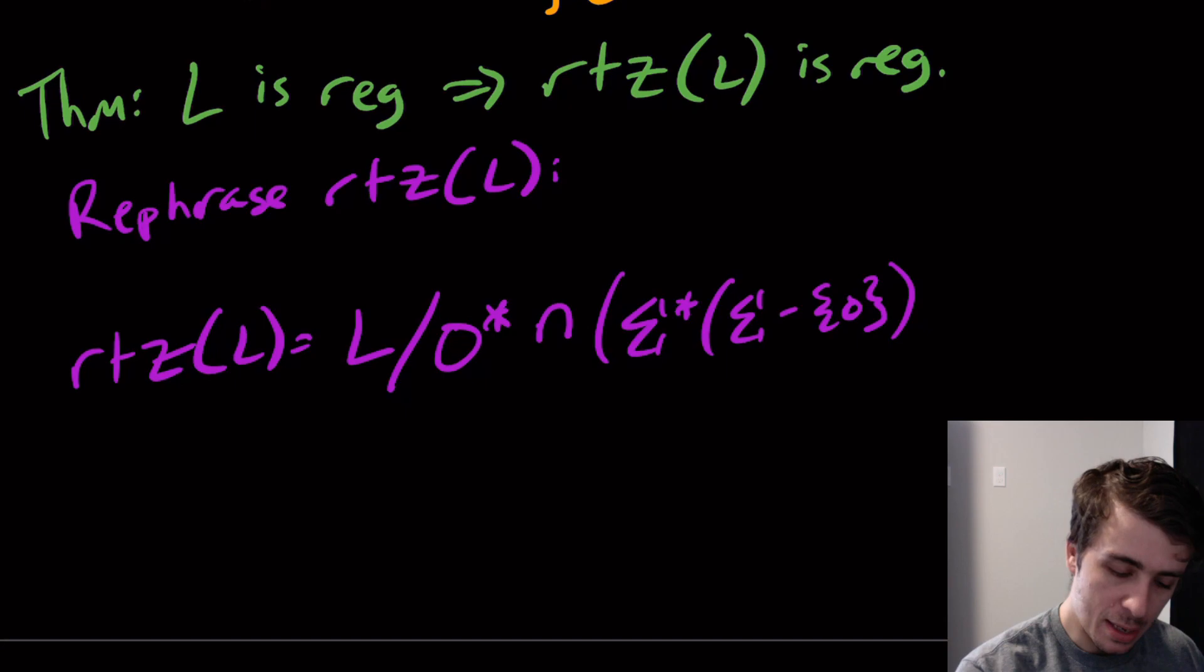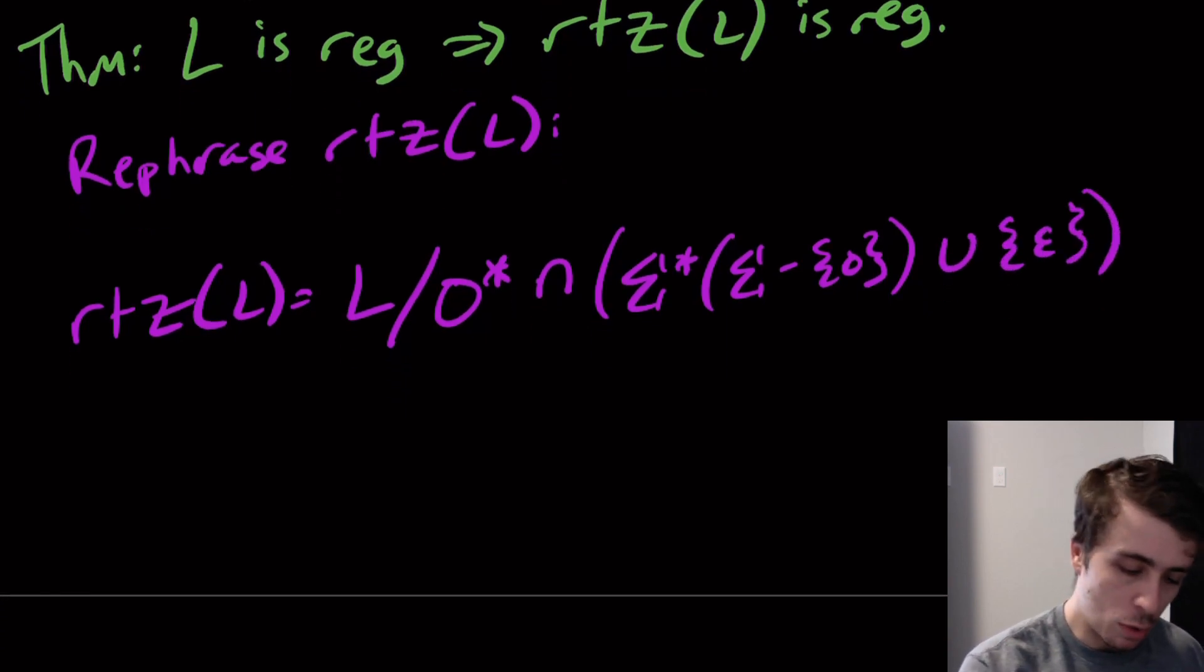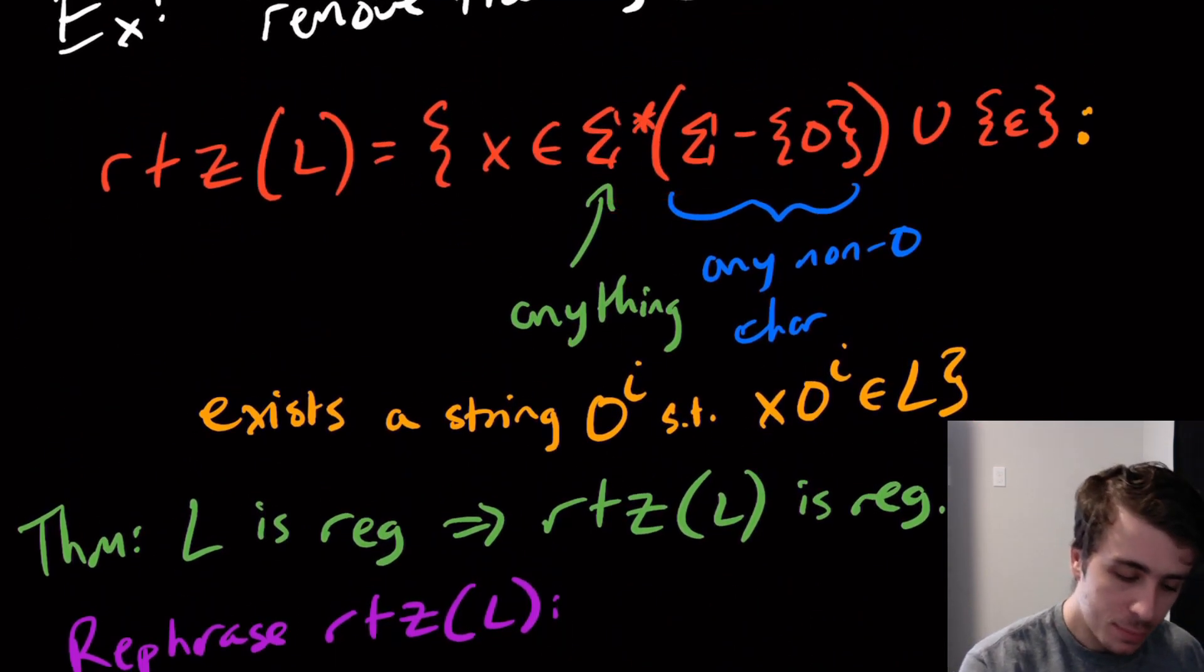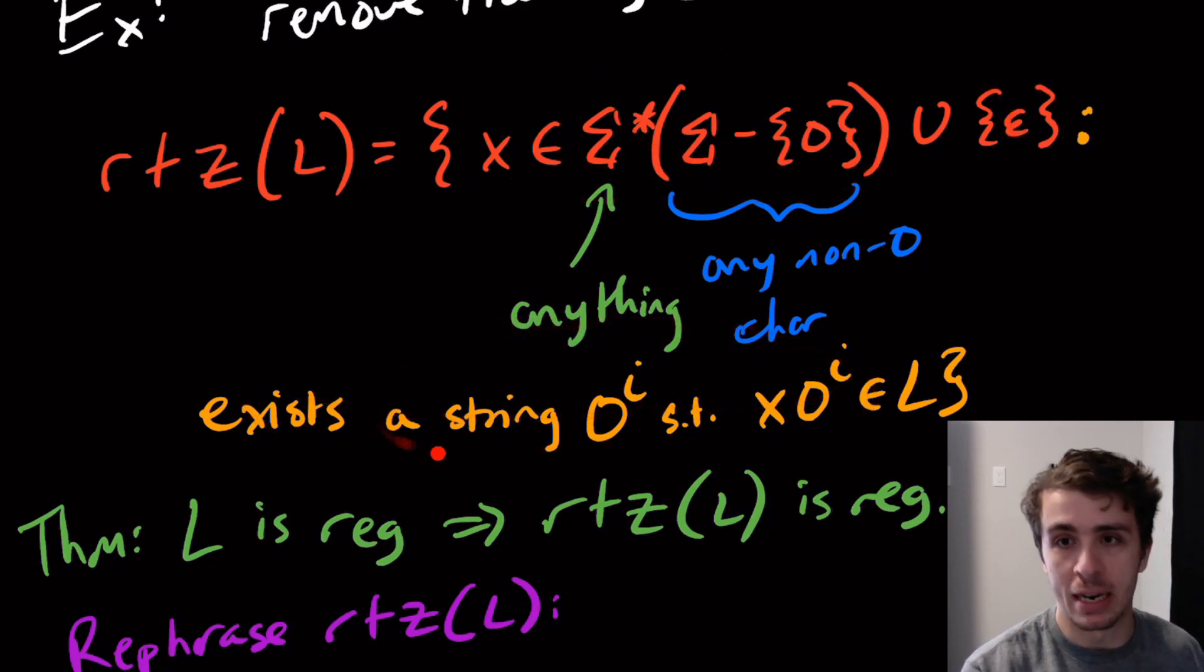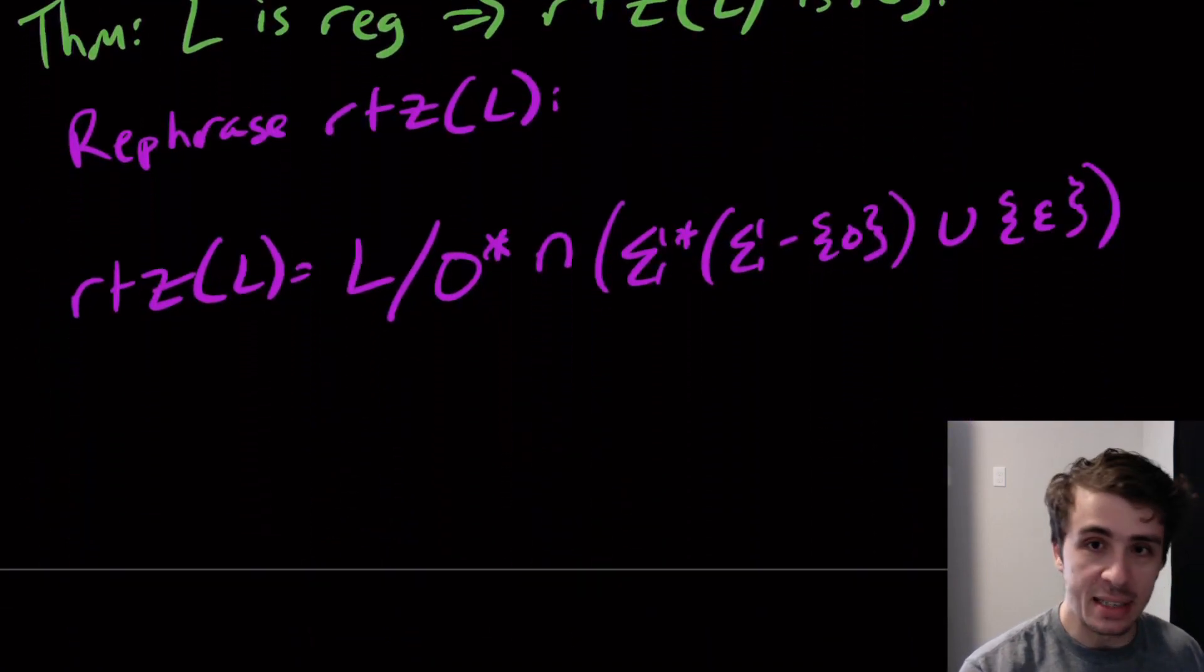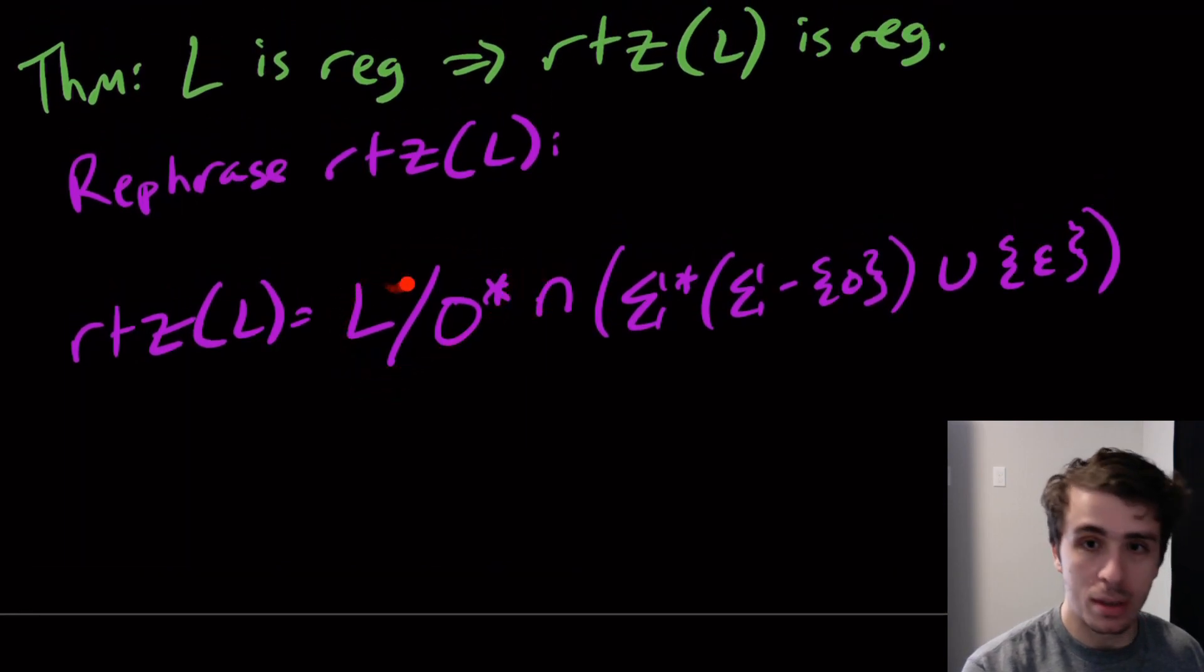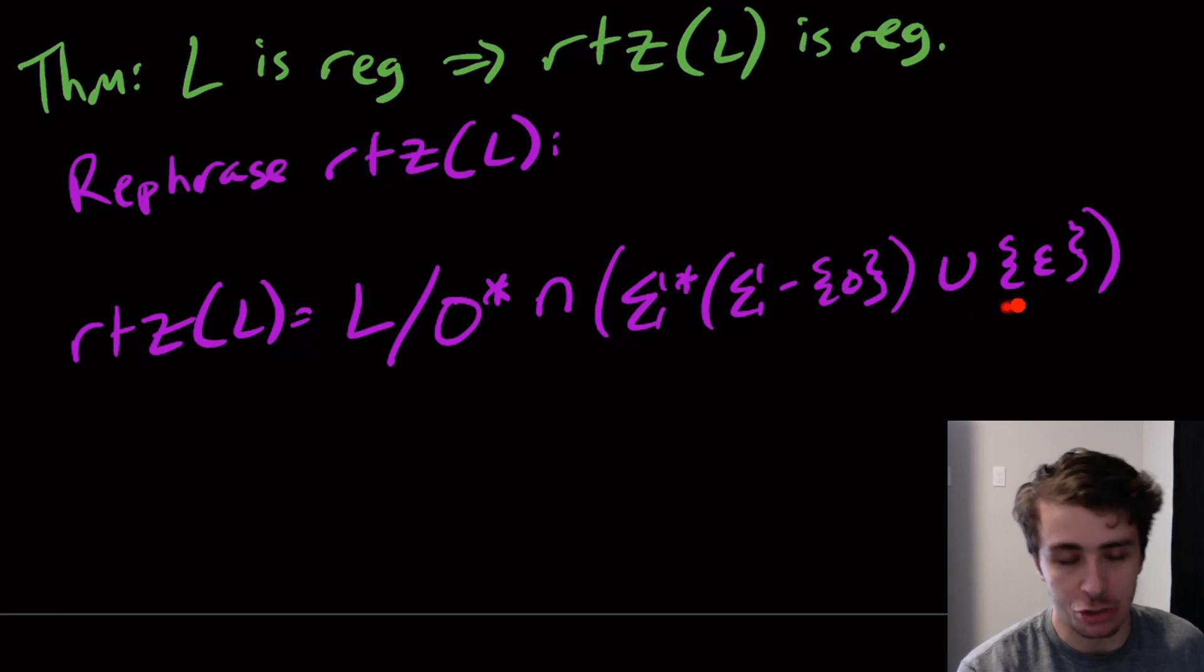So we're quotienting all the strings that happen to have zeros at the end and have this structure, which is exactly what this is saying. All the strings that fit into here and there exists a string such that this property holds, this is exactly the same thing here. We're taking away some number of zeros and the last character can't be a zero or the string is the empty string.